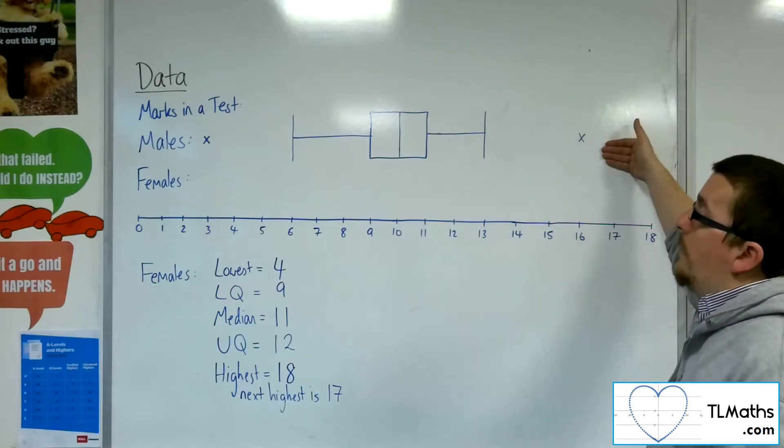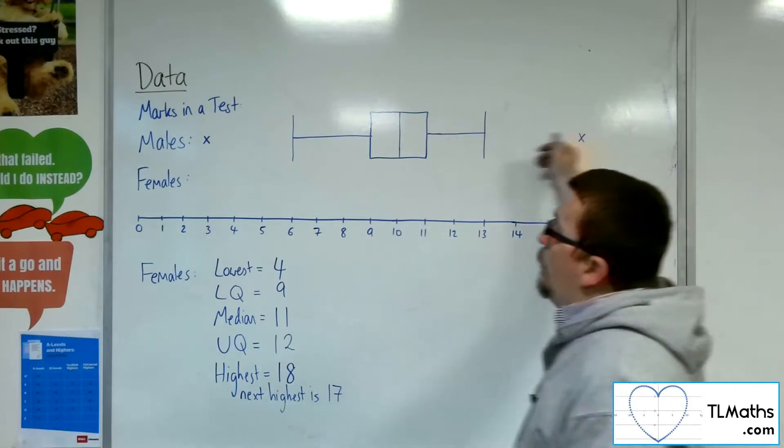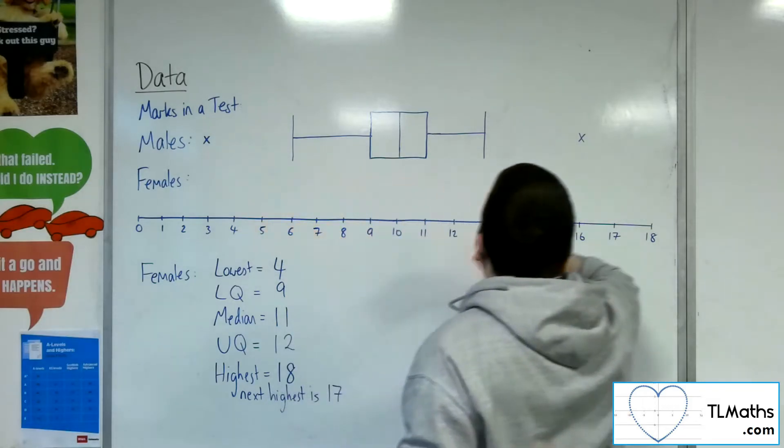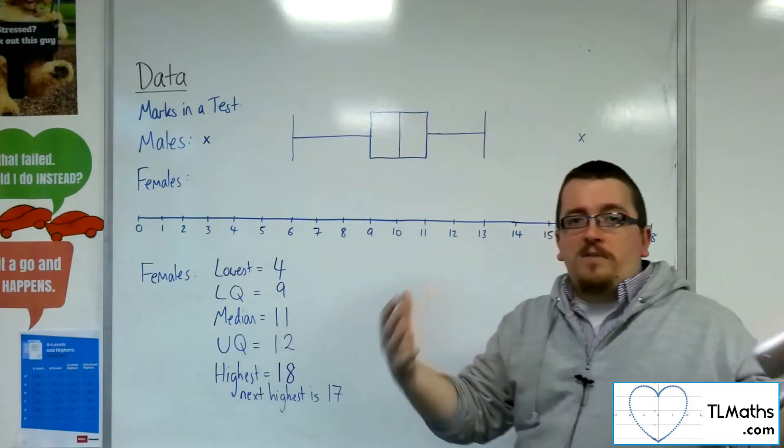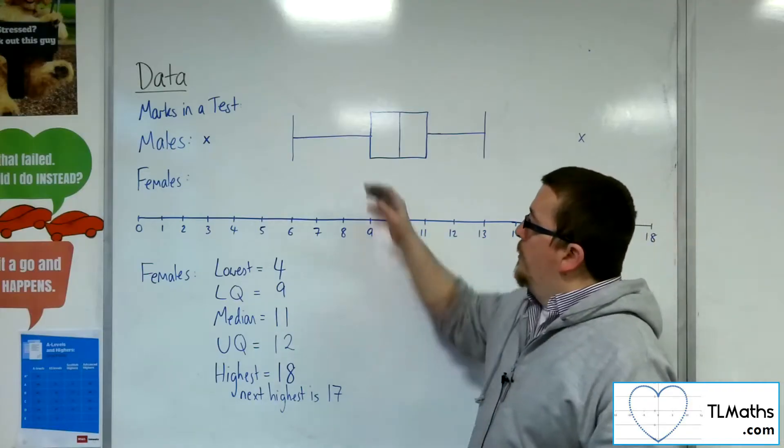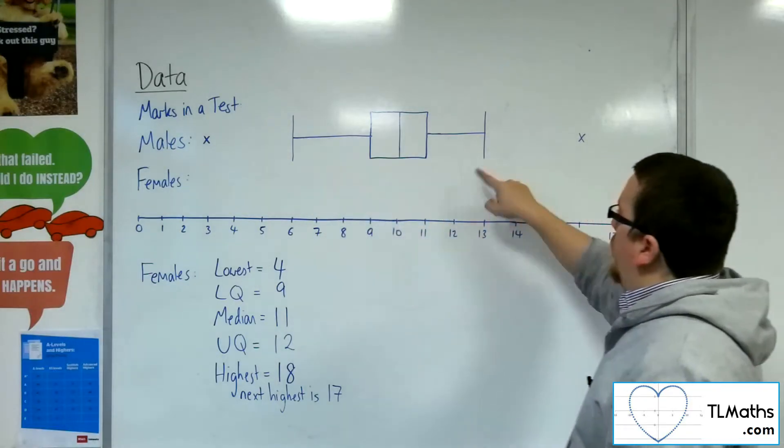Now the males have already been graphed, they're already in the diagram. We've got an outlier down here at 3, an outlier up here at 16. And really, just to make sense of how that box plot's been drawn, just to make sense of what that 6 and the 13 are.